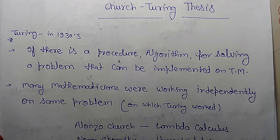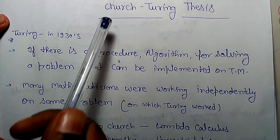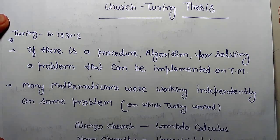In 1930s, Alan Turing worked on a particular problem and solved it. Church, there was another mathematician that also worked on the same problem.